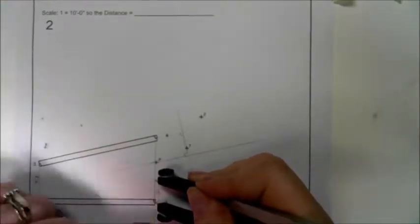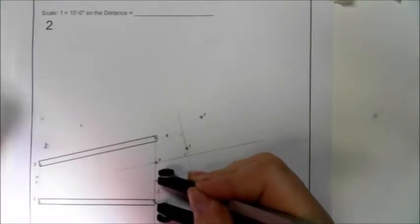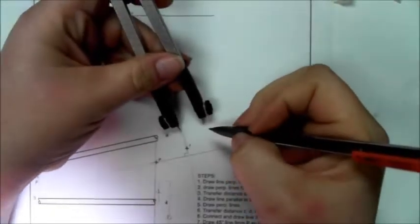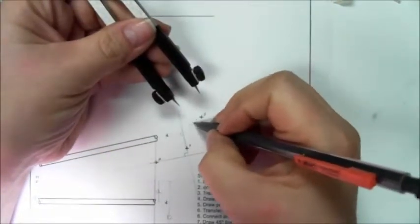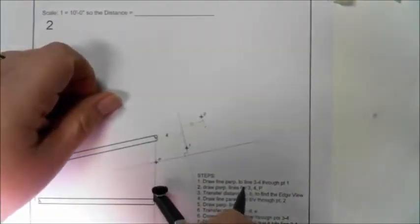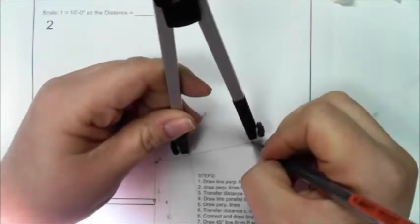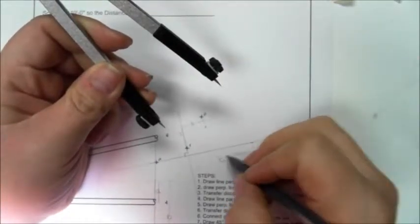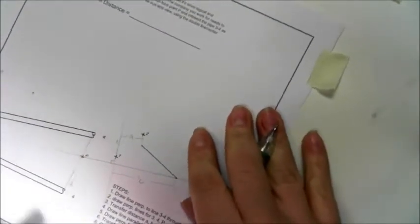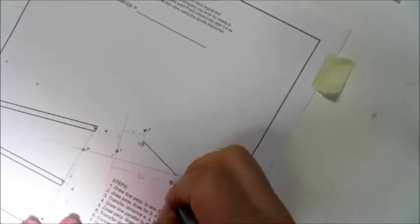Alright, so let's transfer A. Remember it's to the center A, not to the outside edge A, because it's just representing like a pipe. So there's our A on the 3-4. And then our B. This is now going to become 3-4-P.